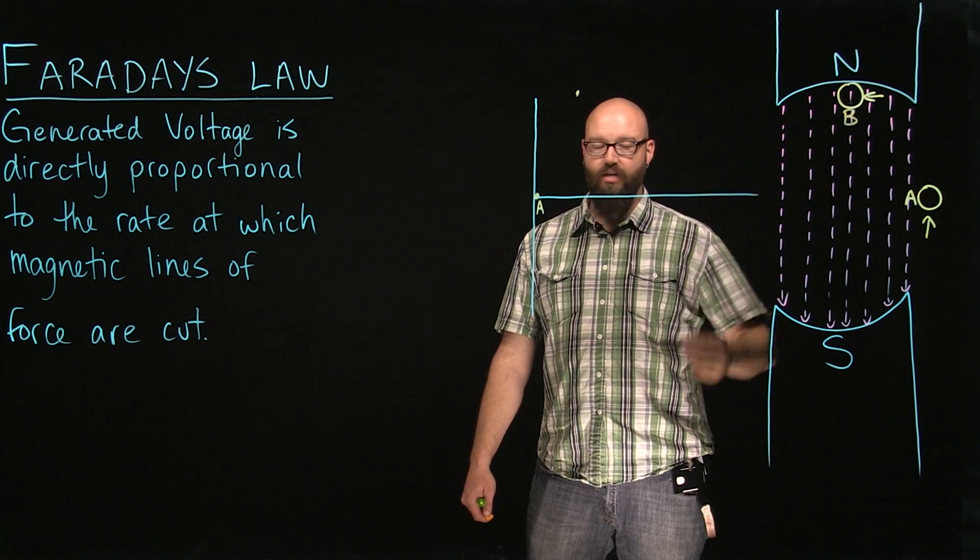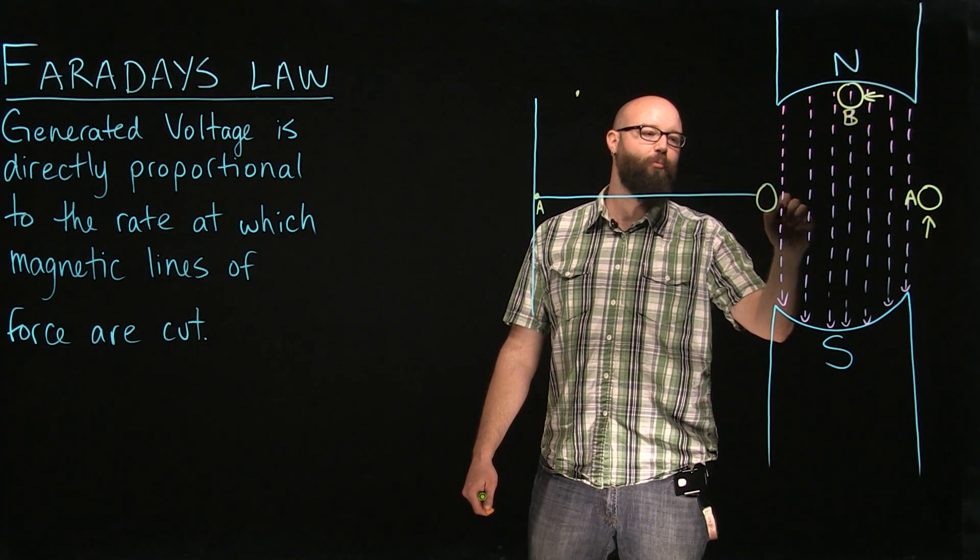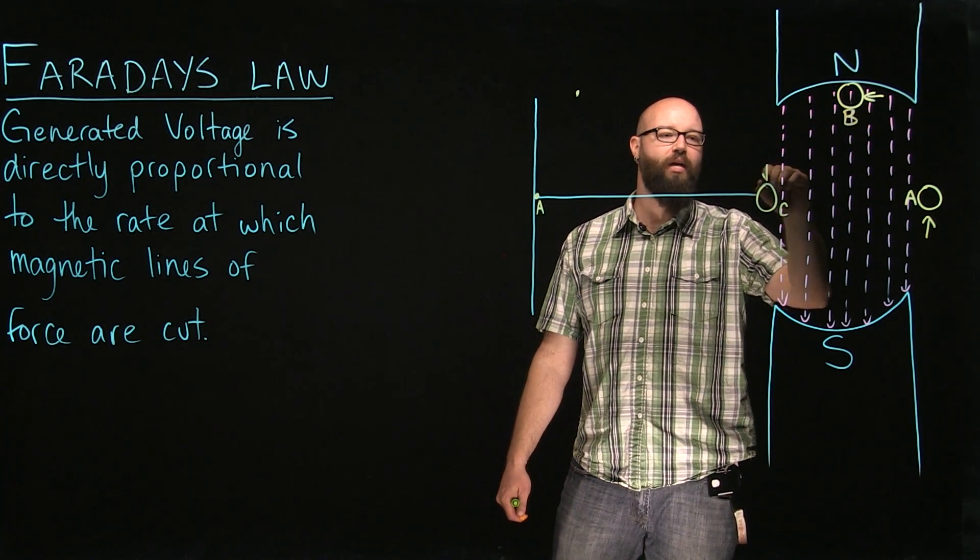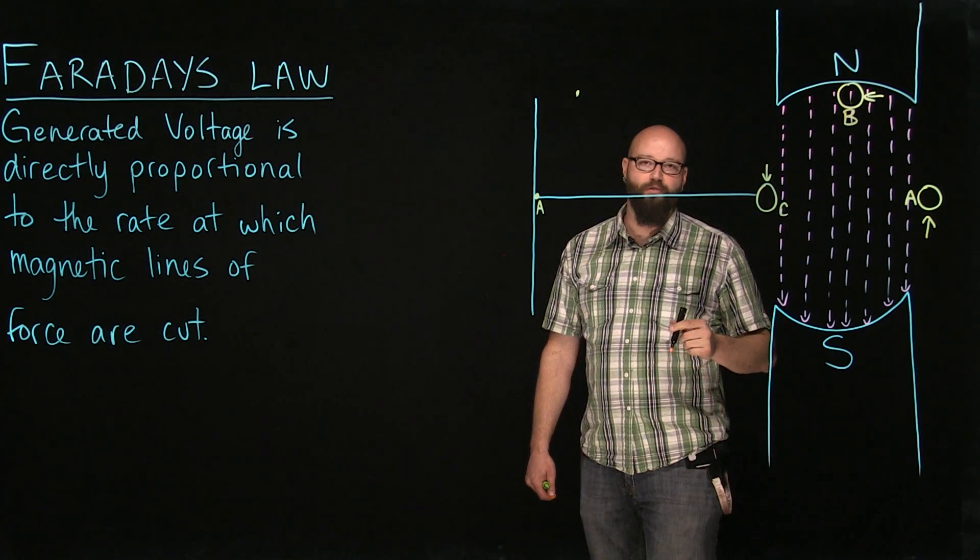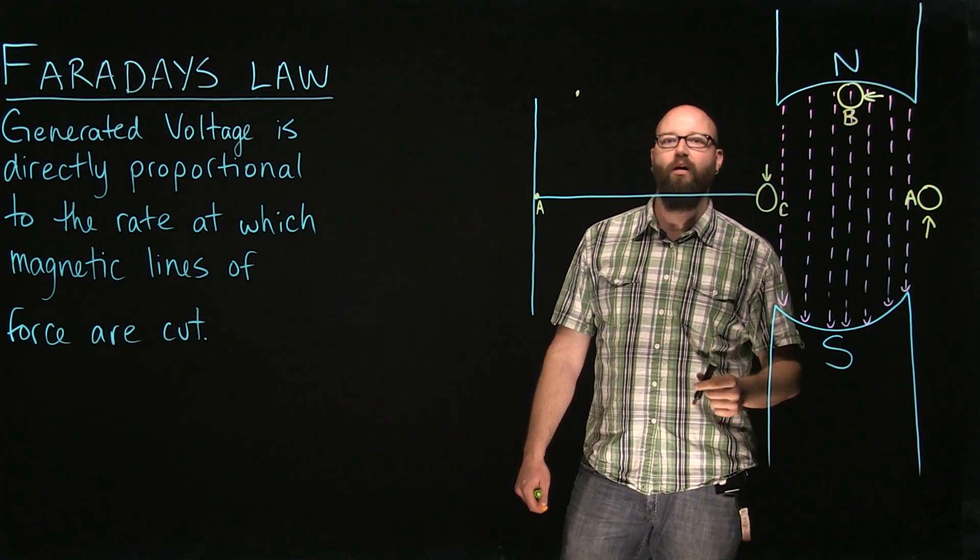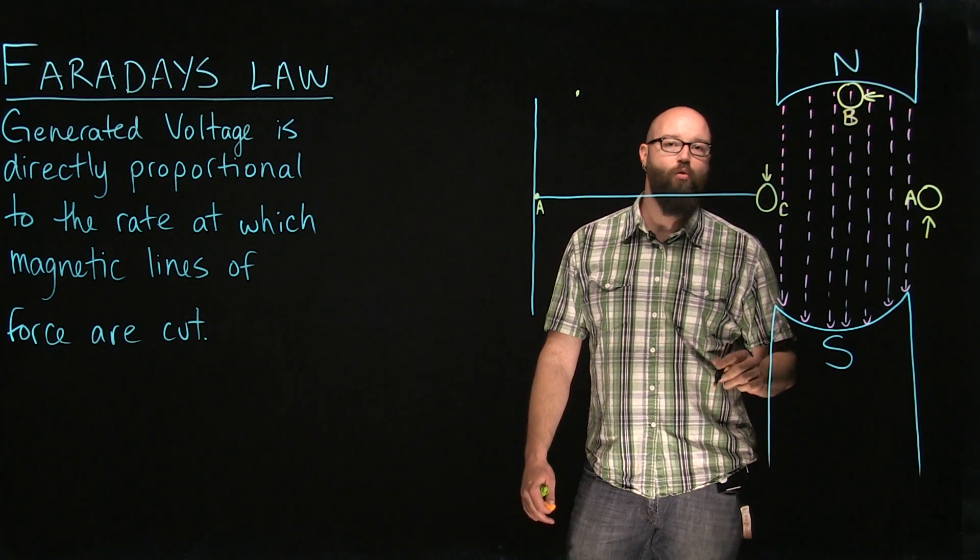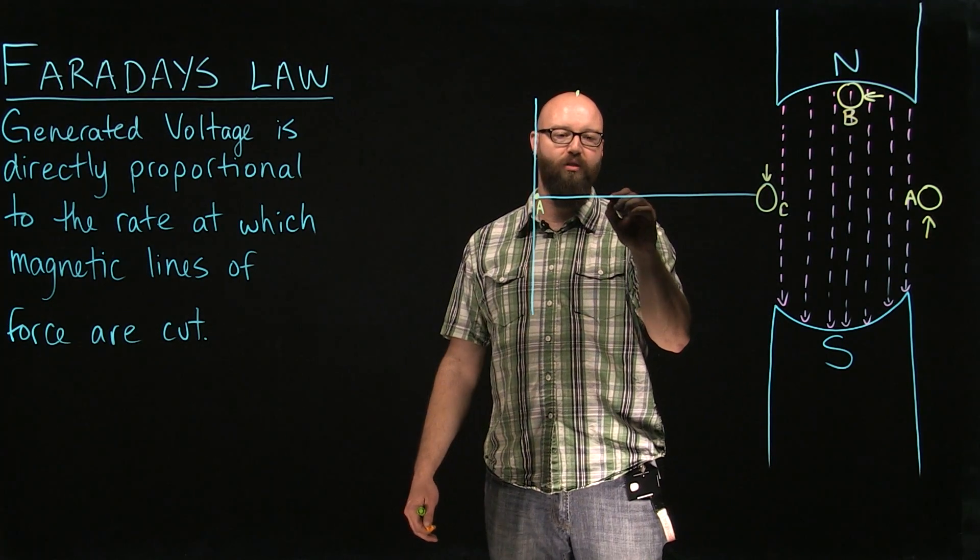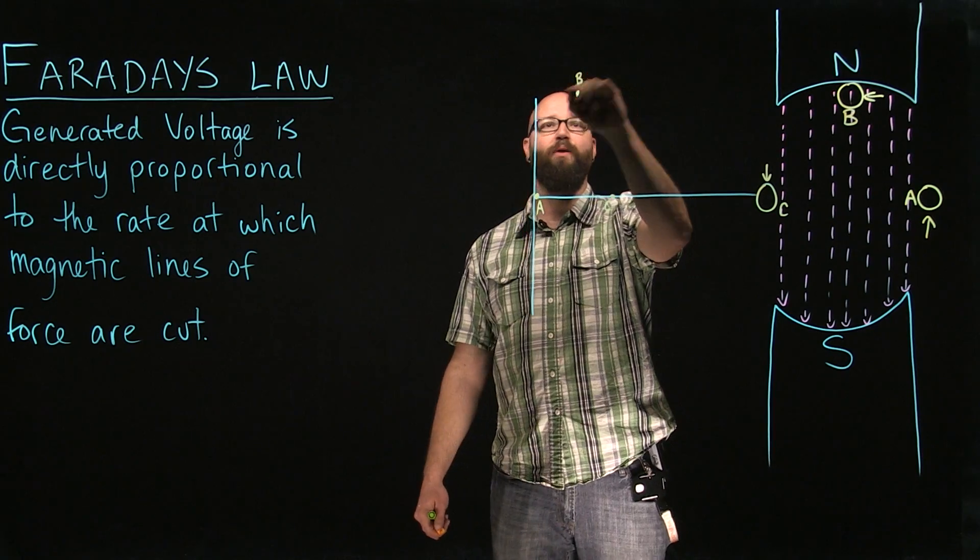Now we're going to rotate this another 90 degrees. Here's our position C right here. Once again, we are now moving down. We're moving parallel to those lines of force. We're no longer cutting lines of force. Therefore, we're getting no generated voltage. We're going to plot our point C right here.